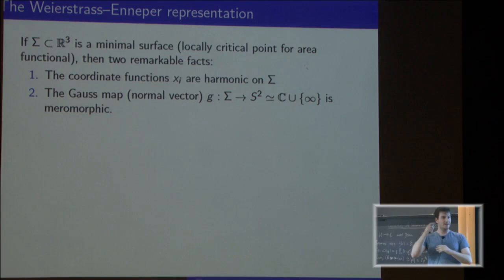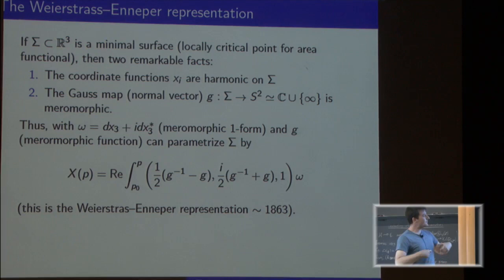If you take the coordinate functions in R3 and restrict the surface, those turn out to be harmonic with respect to the Laplacian of the surface itself. That's a nice computation. You could do that in your first course in geometry of surfaces. You can see that the Laplacian of Xi is related to the mean curvature times something. And then the second fact is that the Gauss map, so the unit normal vector, so it's moving around. You can think about it as a map to S2, which is the same as C. And then that's going to be meromorphic function.